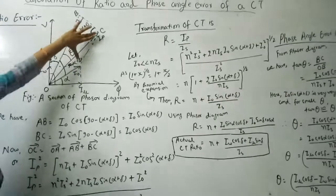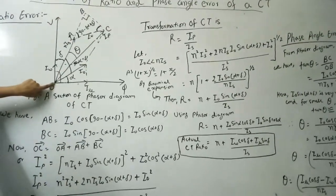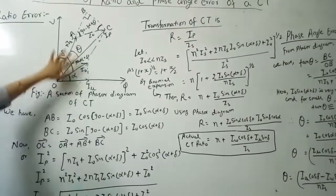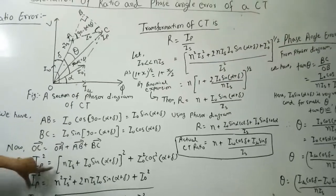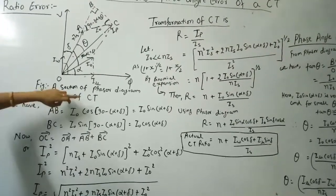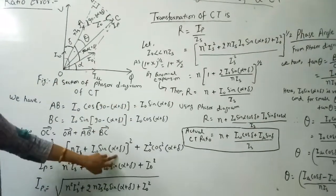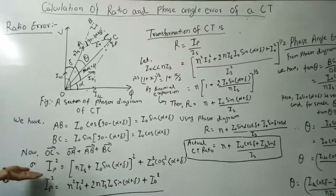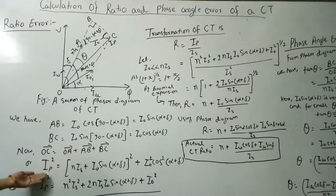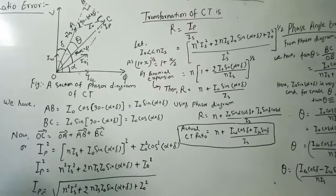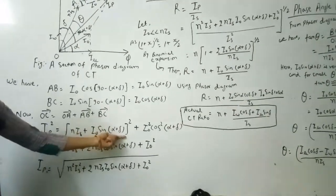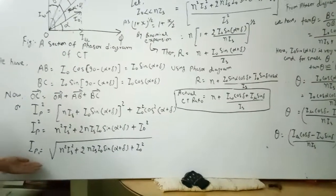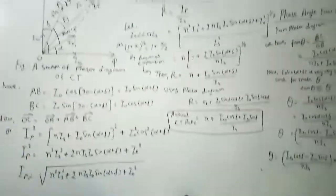Now OC, the primary current IP, is the phasor sum OA + AB + BC. So IP equals N·IS + I₀ sin(α + δ) + I₀ cos(α + δ). The resultant is IP² = (N·IS + I₀ sin(α + δ))² + (I₀ cos(α + δ))². Simplifying, IP = √(N²IS² + 2N·IS·I₀ sin(α + δ) + I₀²). This is a straightforward mathematical derivation.